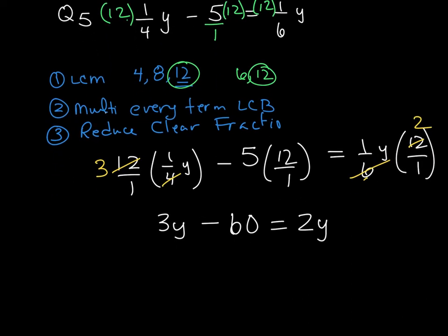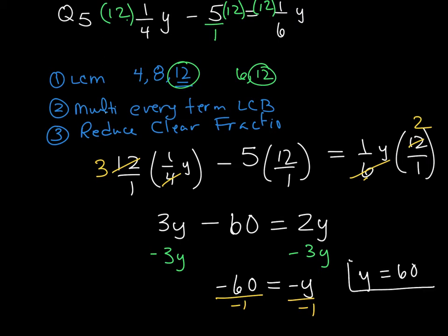I'm going to go ahead and subtract 3y from both sides. And then I would be left with negative 60 is equal to negative y. And your final answer is not negative 60. This is really important. Whenever there's a negative in front of the variable, divide both sides by that negative 1. And your final answer is a positive y. Always must be a positive for your answer with this. We'll look at one more question with fractions.